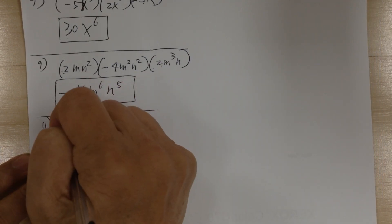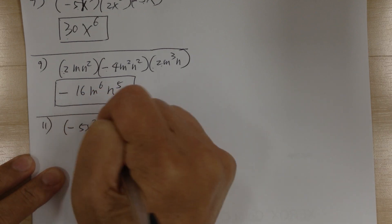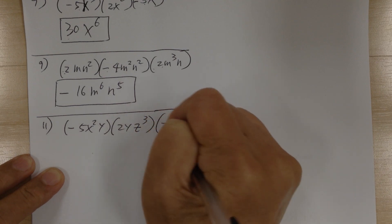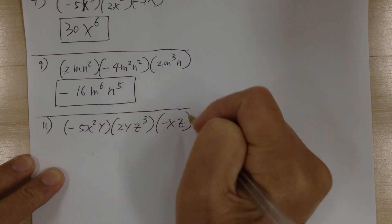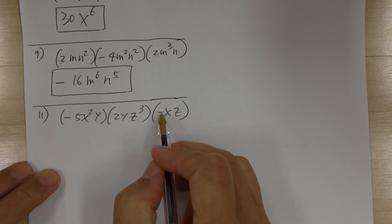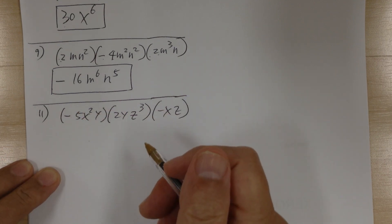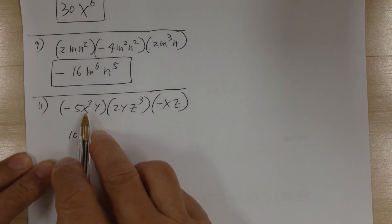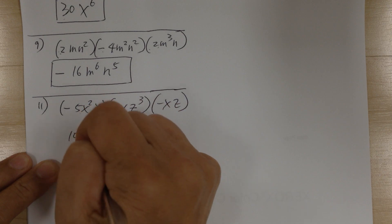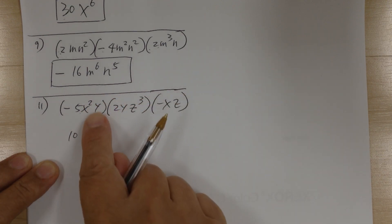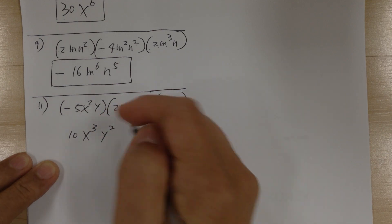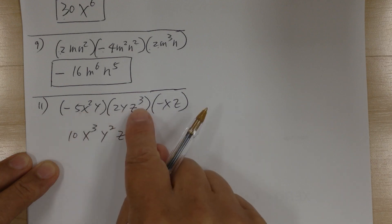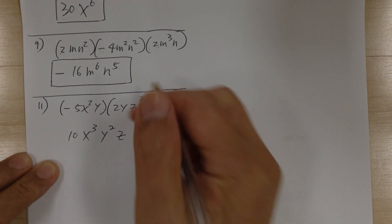Number 11. You have negative 5x squared y times 2yz to the 3rd times negative xz. There are an even number of negatives, so the result is positive — you don't have to write anything. The number: 5 times 2 times 1 gives you 10. Go down the alphabet: x squared times x to the 1 is x to the 3. Then y times y is y squared. Then z to the 3 times z to the 1 is z to the 4.